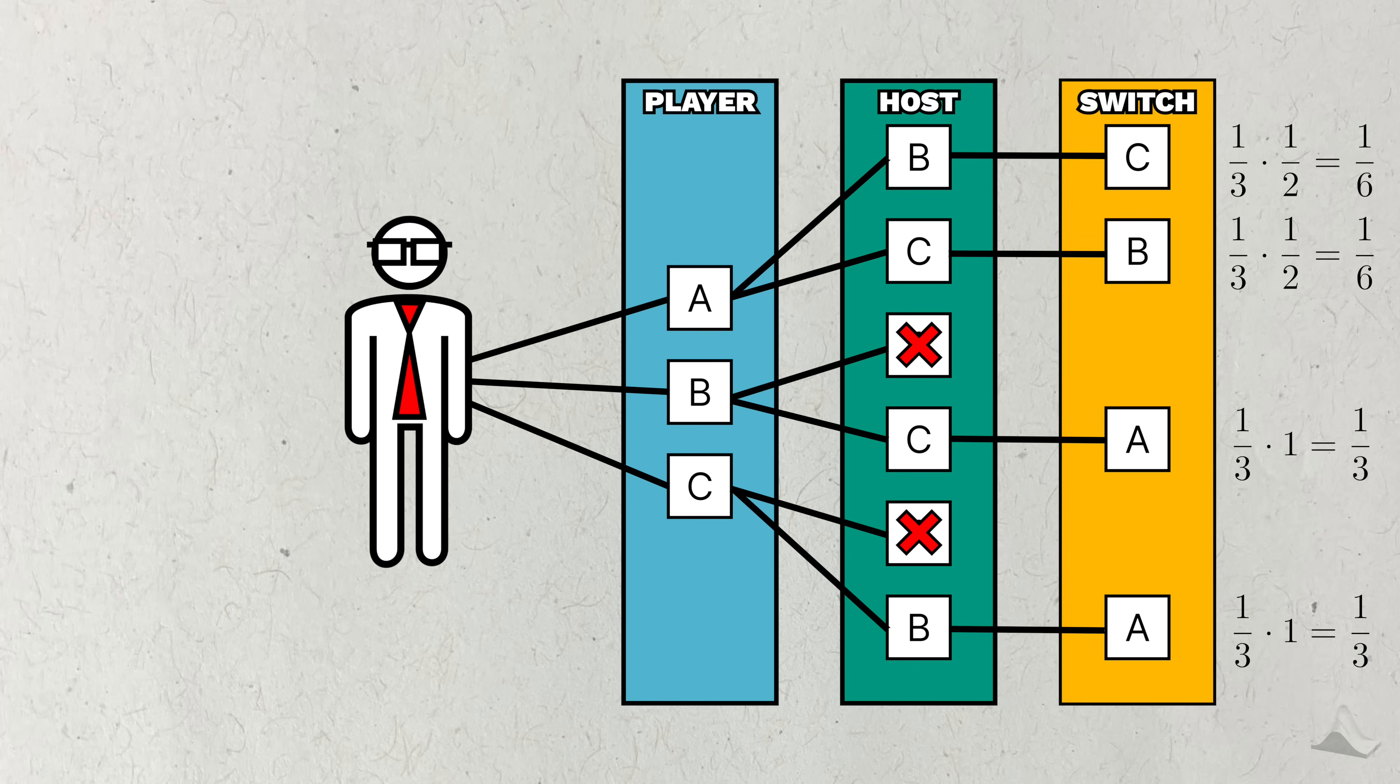But now let's consider the switch strategy. The only thing that changes are the doors that the player ends up with. The probabilities of each path are still the same. So the probability that a player wins using the switch strategy is two-thirds, twice the probability of the stay strategy, and therefore the better one to take.